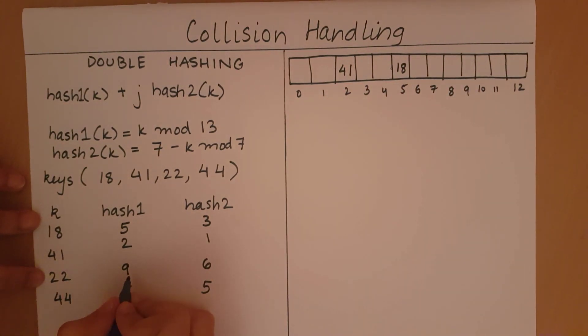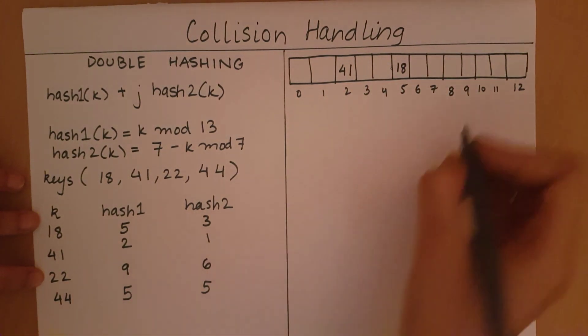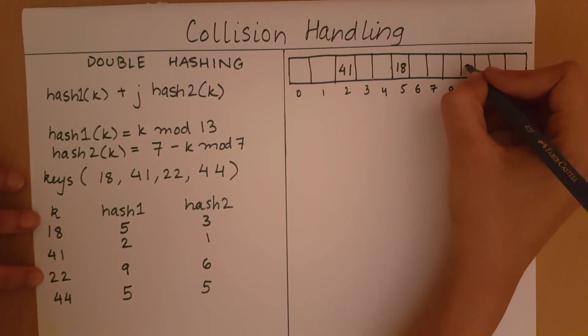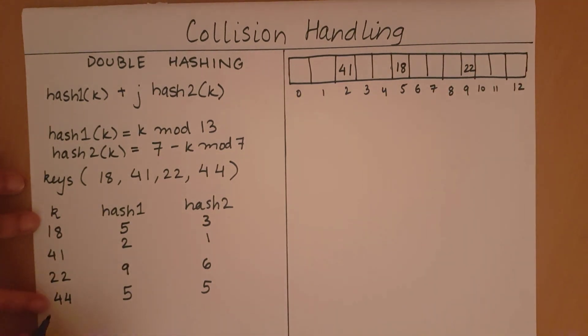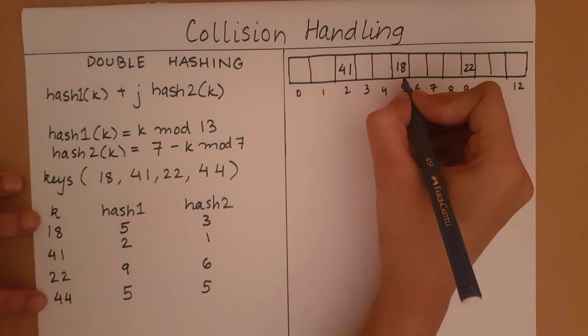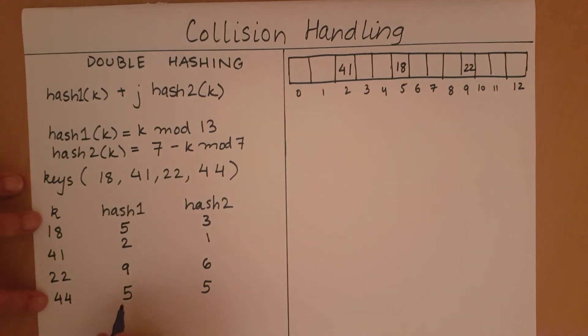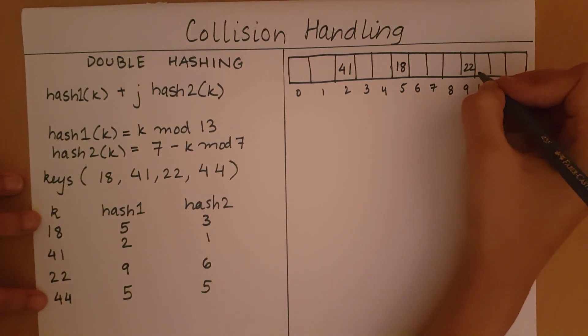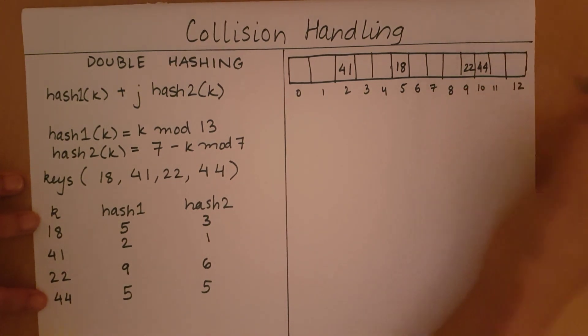Now, 22. I'll take 9 plus 0 times 6. The ninth cell is empty, I can add 22. Now, when I come to 44, I have 5 plus 0 times 5, which is the fifth index. This index is not empty. So now, I will take 5 plus 1 times 5, which is the tenth index. This index is empty, so I can add it.